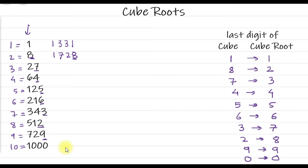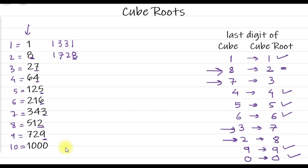Obviously, if it ends with 0 the cube root also ends with 0. Now, how to remember these: there is nothing to remember for 1, 4, 5, 6, 9, and 0, as they are the same. You only need to remember two combinations: if the cube ends with 8 the root ends with 2, and vice versa — their total is 10. Similarly, if the cube ends with 7 the root ends with 3, and vice versa — 3 and 7 also give you 10.